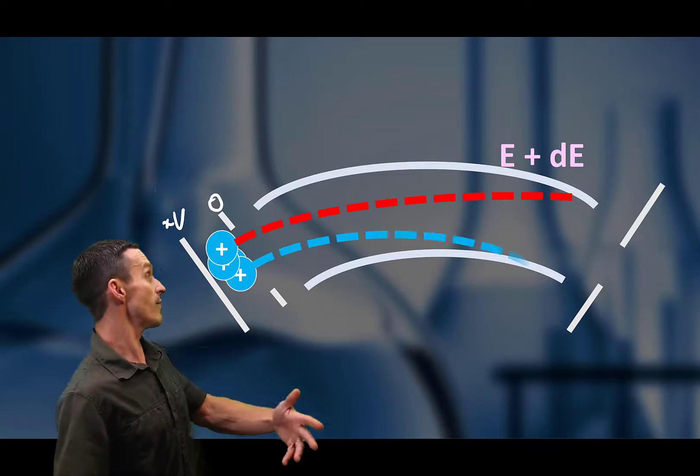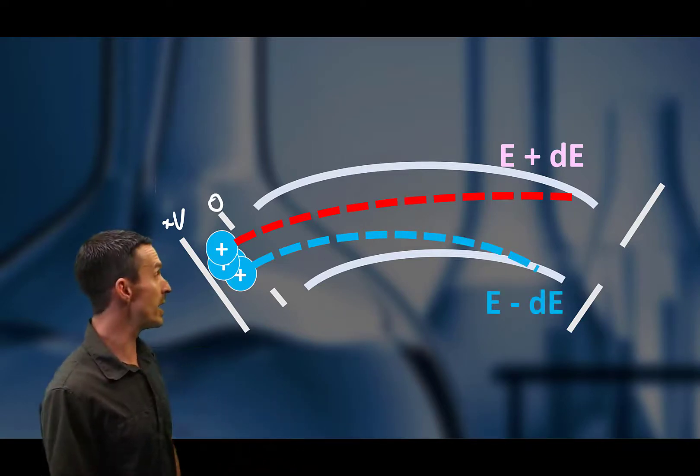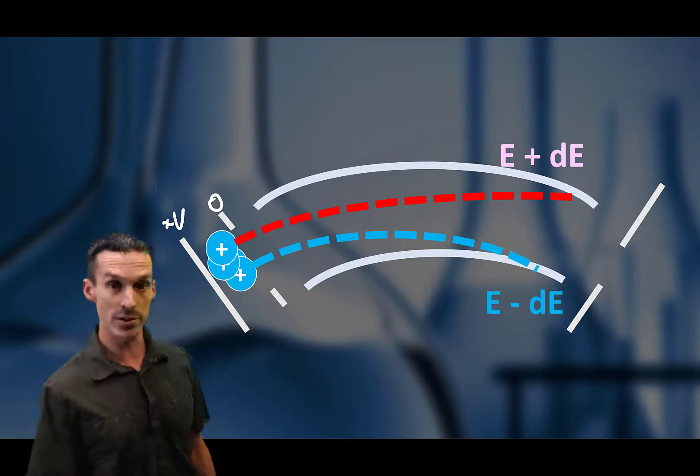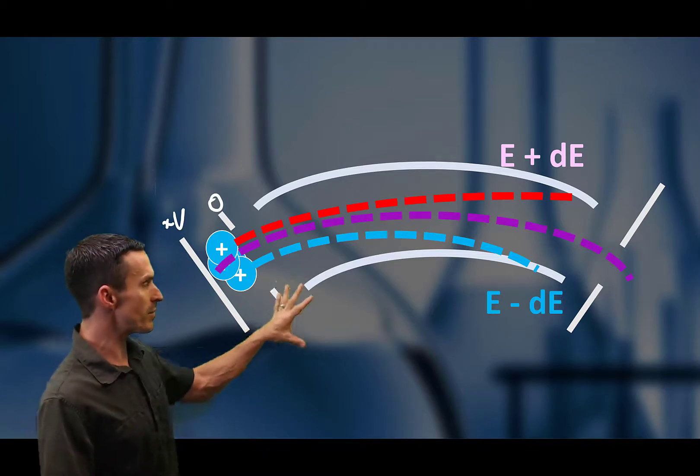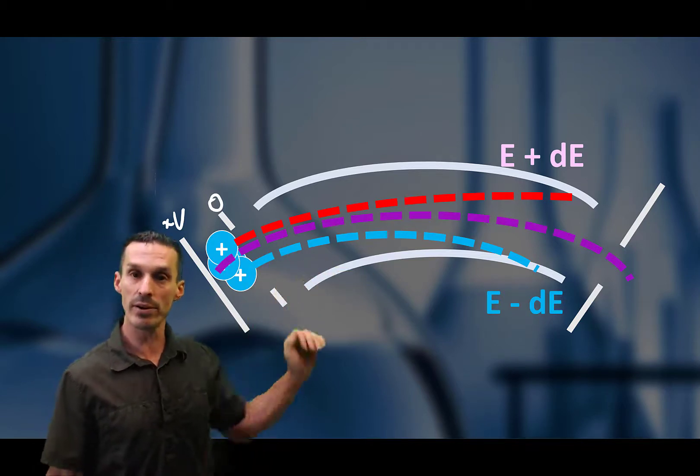And of course, the other half of the population, or not half, but many of them, are going to be too low in energy. So they're going to curve too much. Only those ions that are in this sort of middle ground are able to get through the sector.